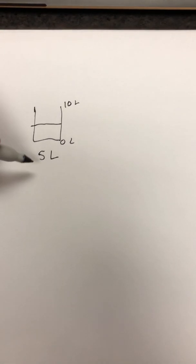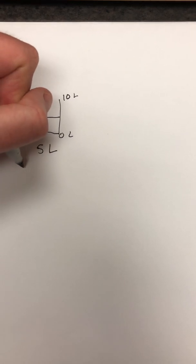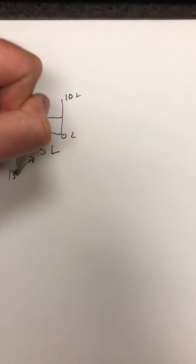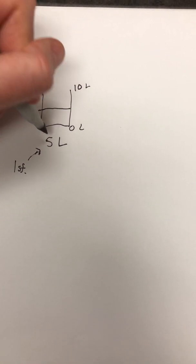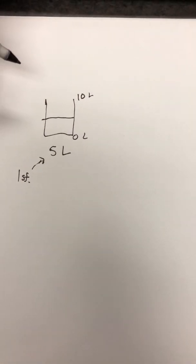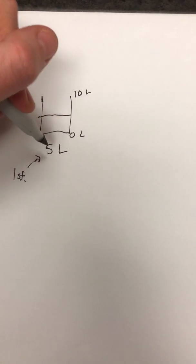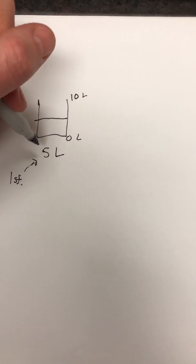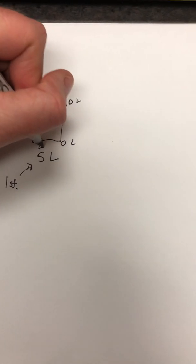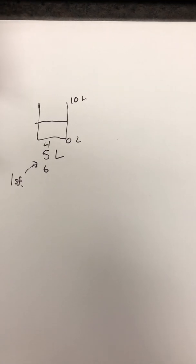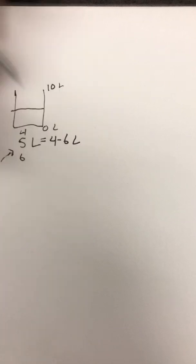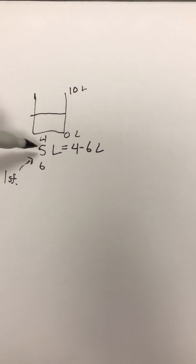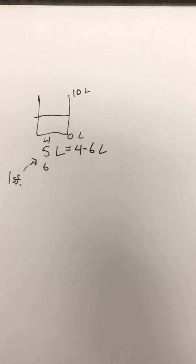When we look at 5, this has just one significant figure. You look at a range between plus or minus 1 of the last significant figure. Because it only has one significant figure, we're going to look at a range between plus or minus 1. So 5 minus 1 would be 4 and 5 plus 1 would be 6. In other words, we're actually looking at a range between 4 and 6 liters.